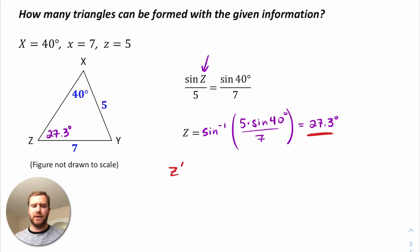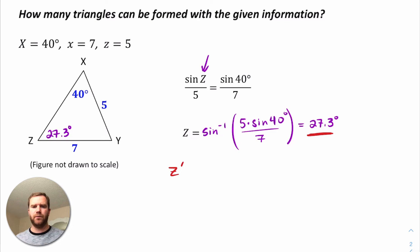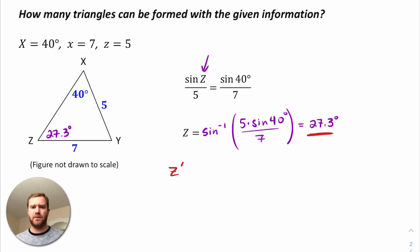Z prime would have to be the supplement of 27.3 degrees. The reason is the definition of inverse sine. The inverse sine is defined in quadrants 1 and 4, but all measures in quadrant 4 are negative angles. So the only way to get a positive output is an angle in the first quadrant. But the sine function — not the inverse sine — is positive in quadrants 1 and 2, meaning we're neglecting any possible angle in quadrant 2.